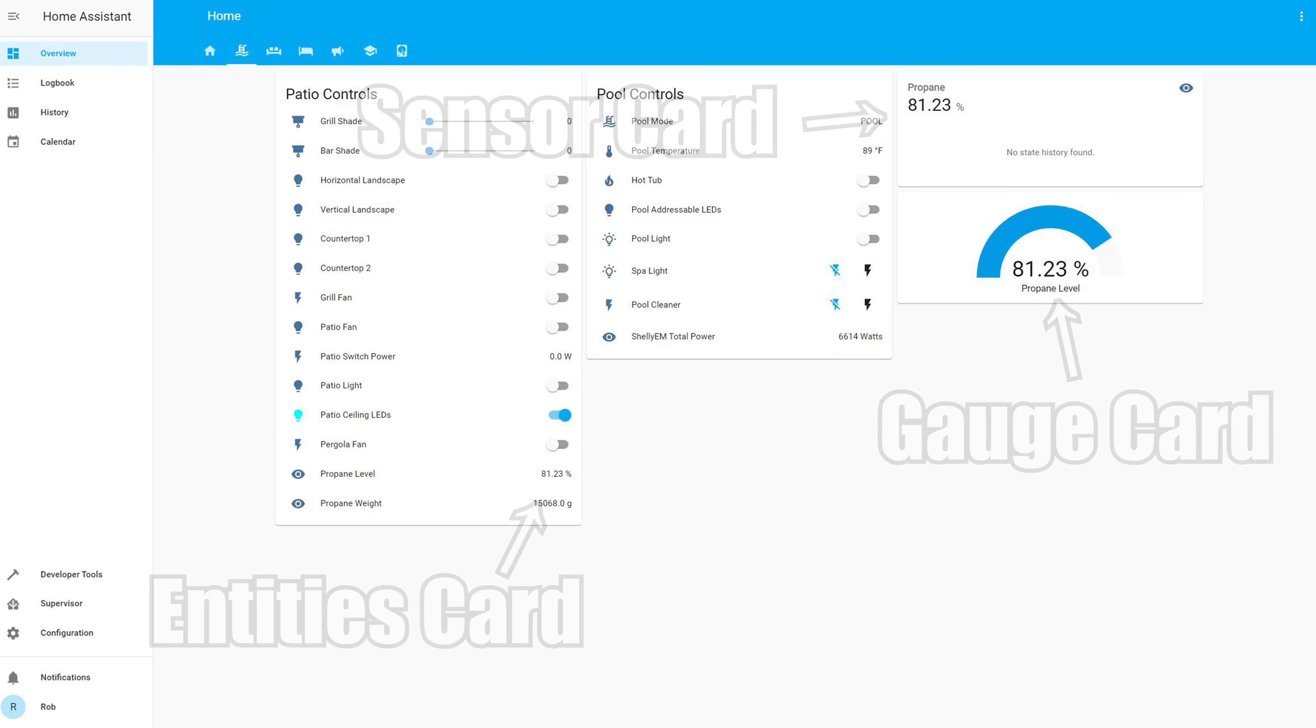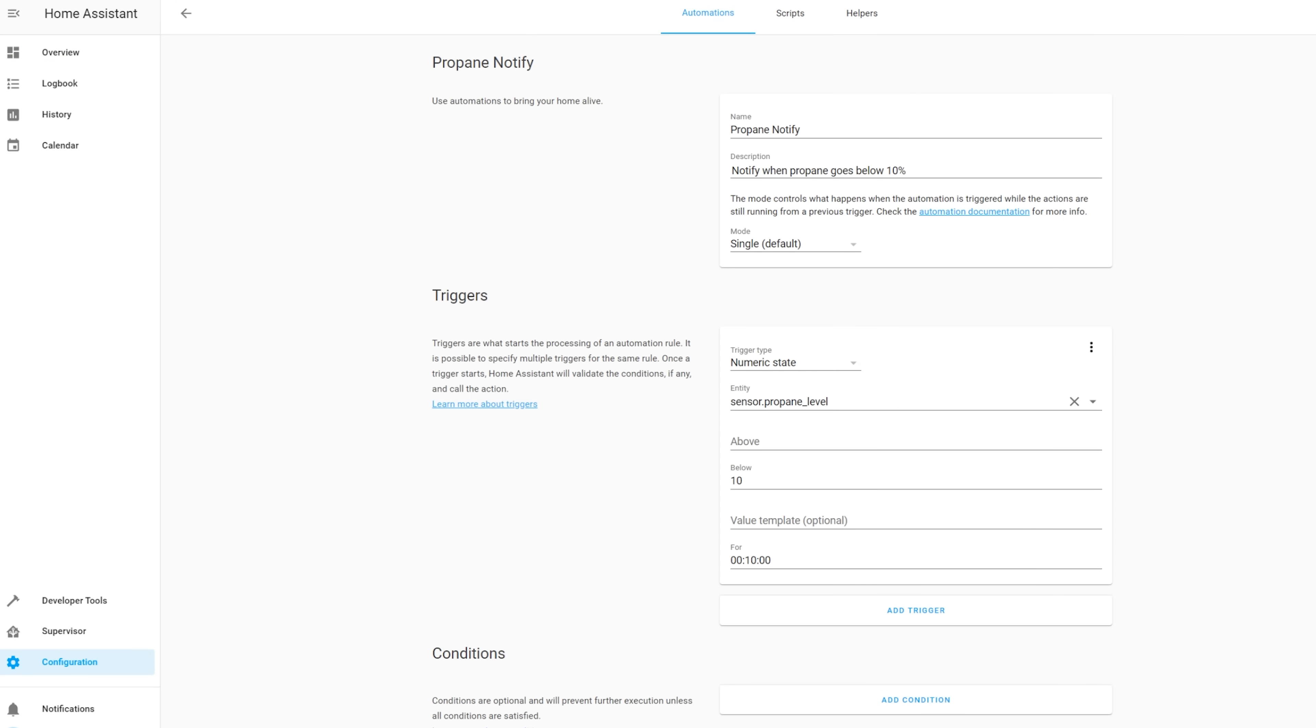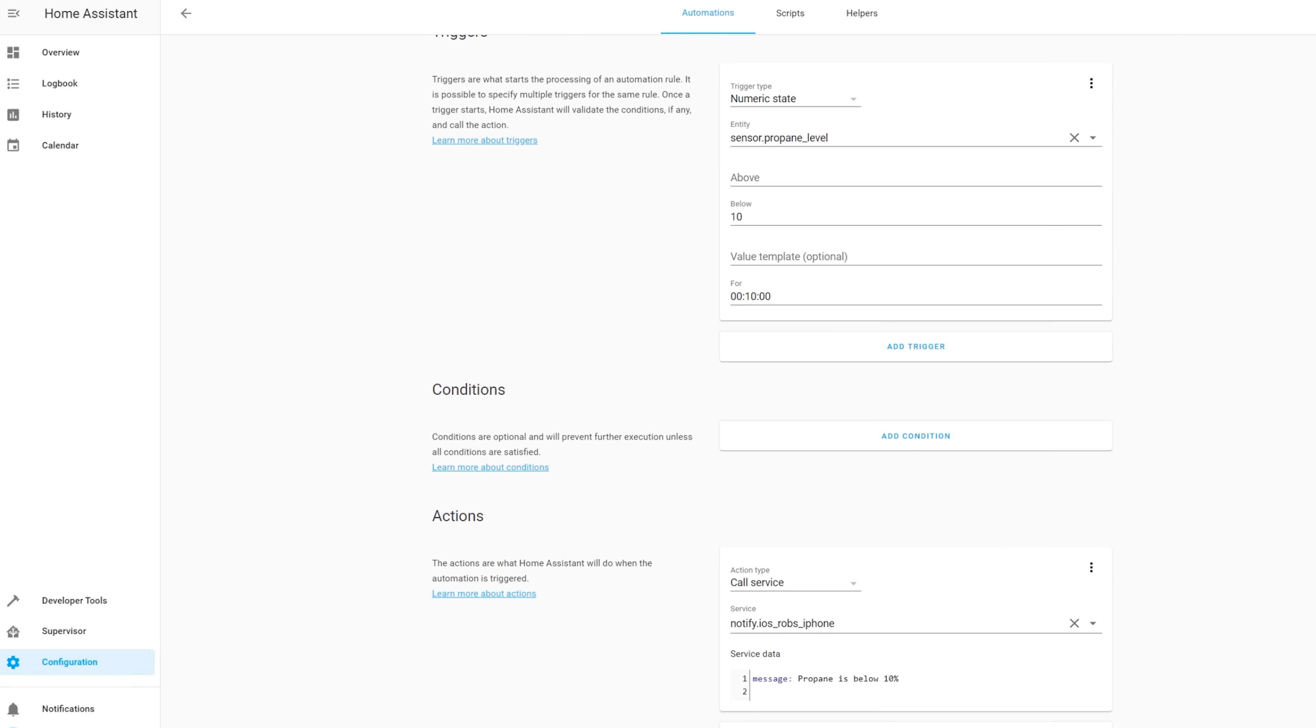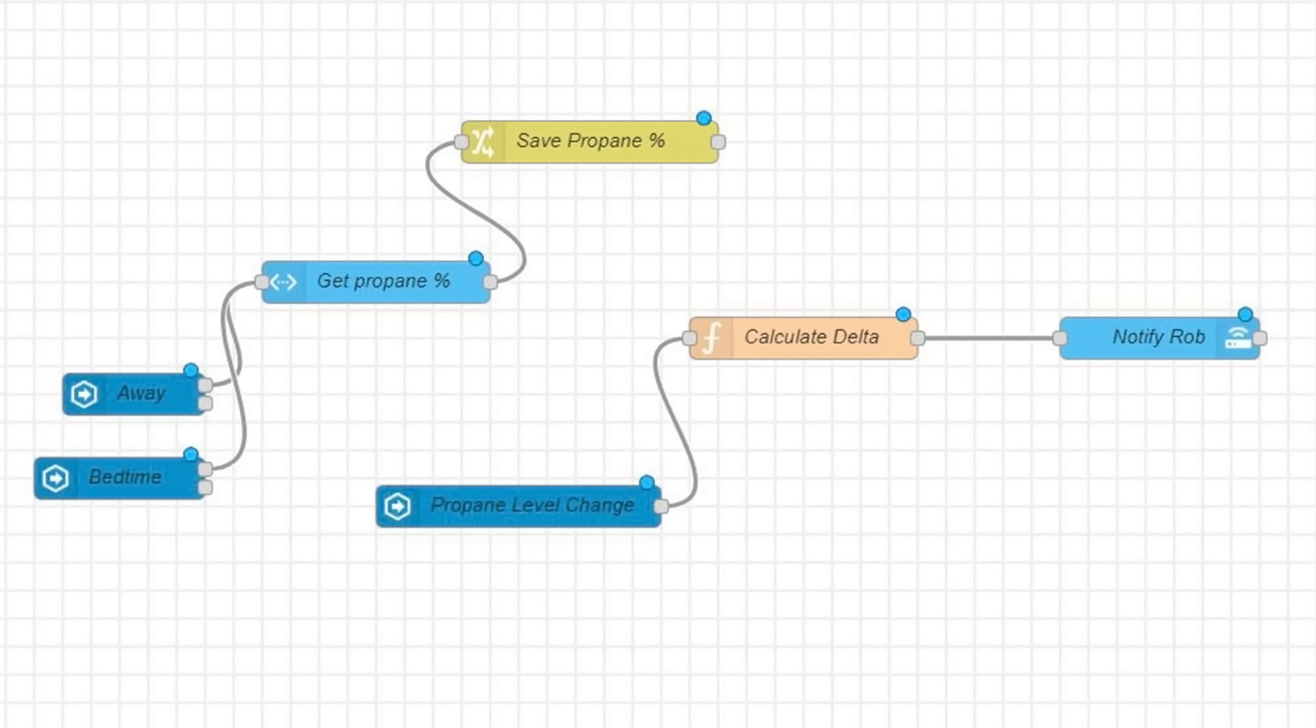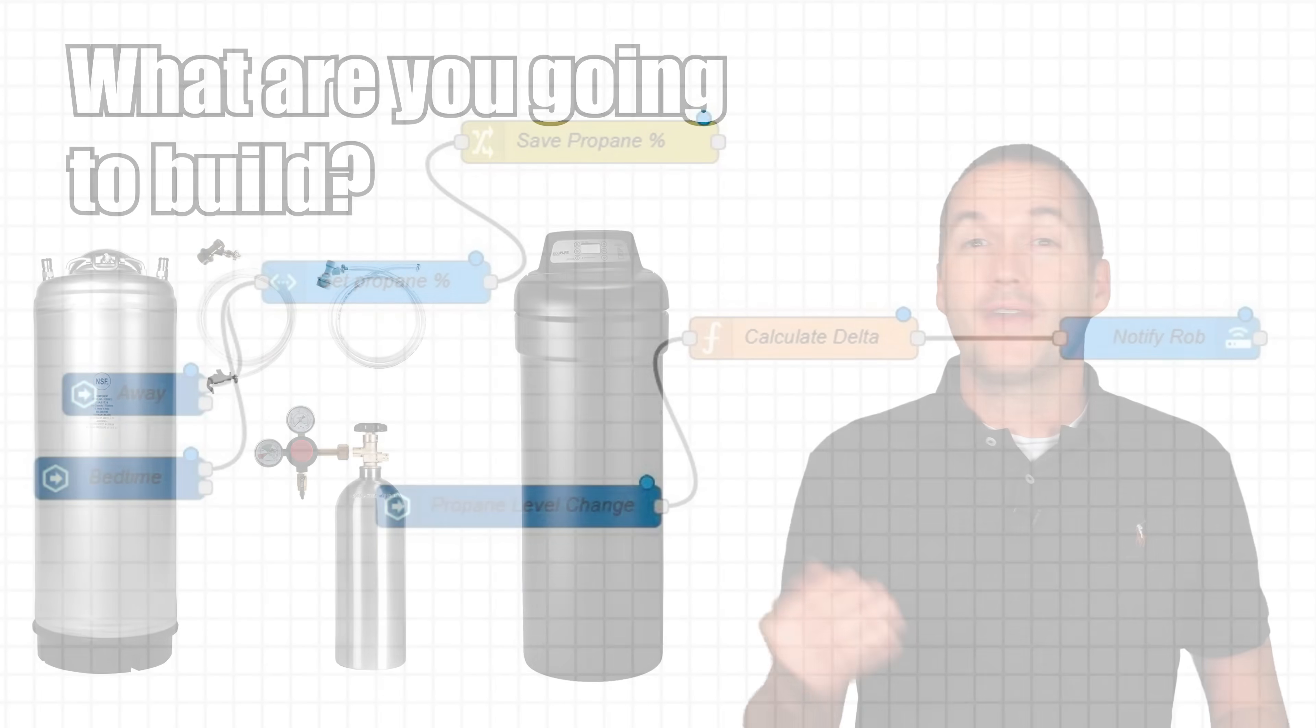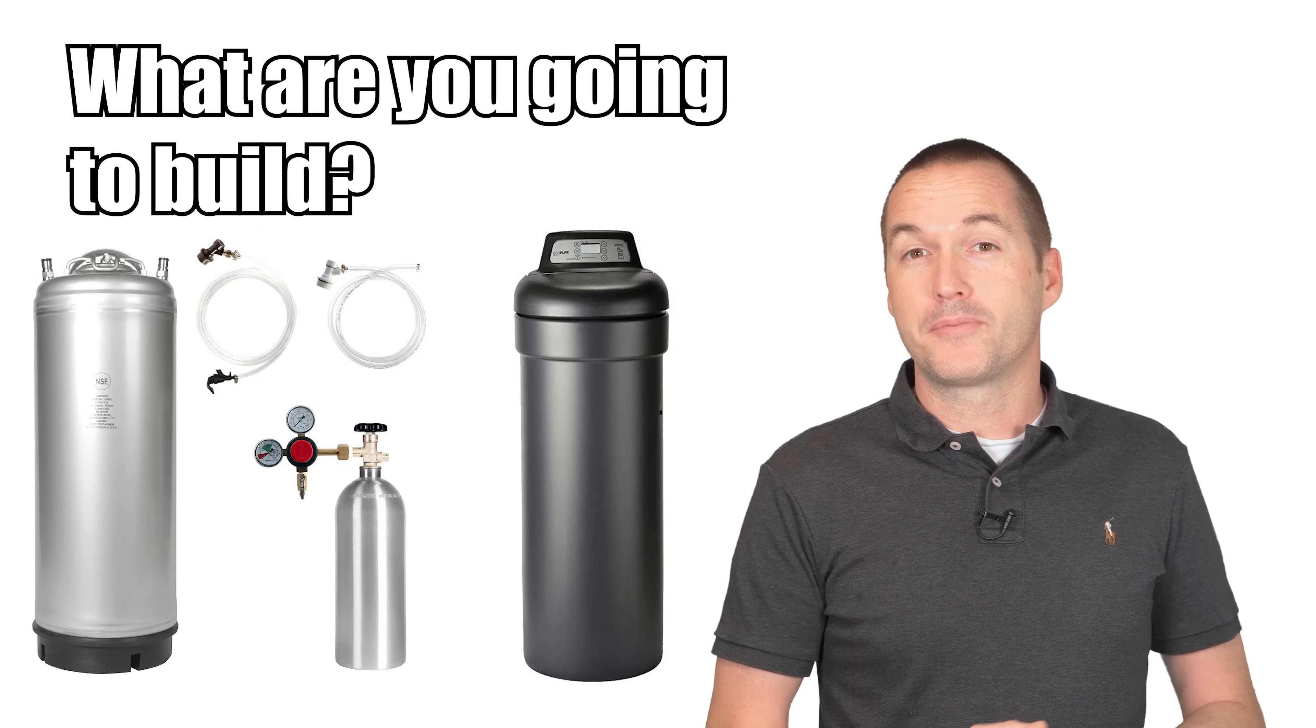Once you've got these values in Home Assistant you can also set up automations to do things like remind you to buy a new tank if the percentage drops below a certain amount, or alert you if the percentage drops a certain amount while you're away from the house or asleep indicating that there might be a propane leak. If you've got a specific use case in mind other than a propane monitor, leave a comment down below to give everyone else some inspiration. If you've got questions about how to make your sensor or how to make it do what you want, feel free to leave a comment or come join us on the Hookup Home Automation Facebook group.